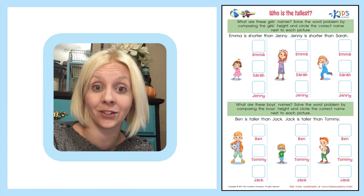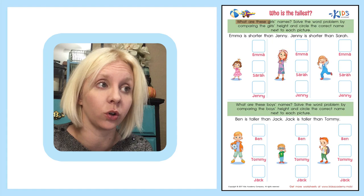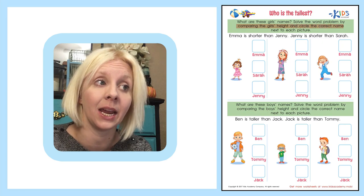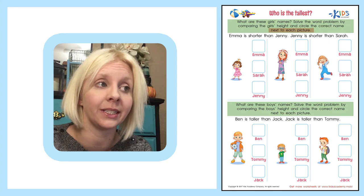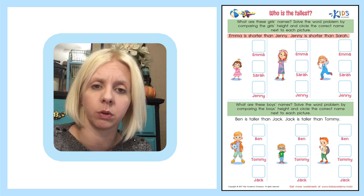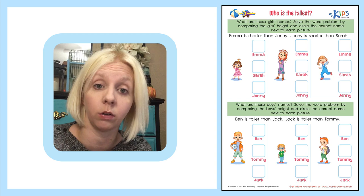Let's look at our next worksheet: 'Who is Tallest?' The directions say: solve the word problem by comparing the girls' height and circle the correct name next to each picture. The first one says: Emma is shorter than Jenny, and Jenny is shorter than Sarah. This is really hard to think about — we have to really stop and think about how we're going to figure out who is the tallest, who is in the middle, and who is the shortest.